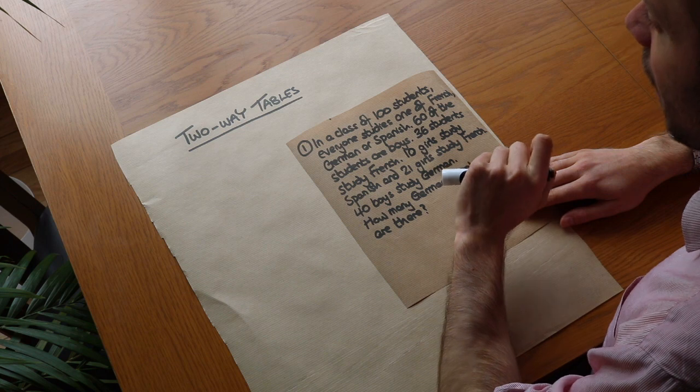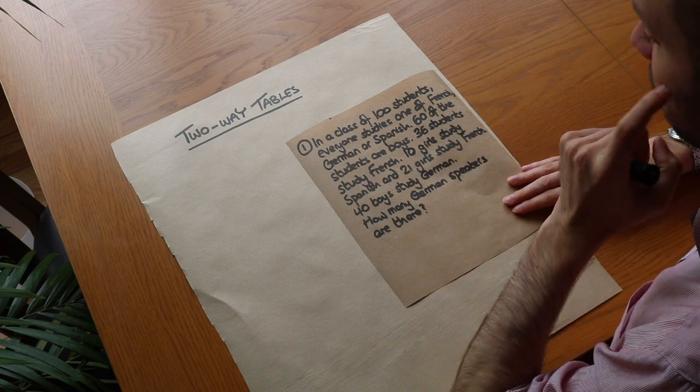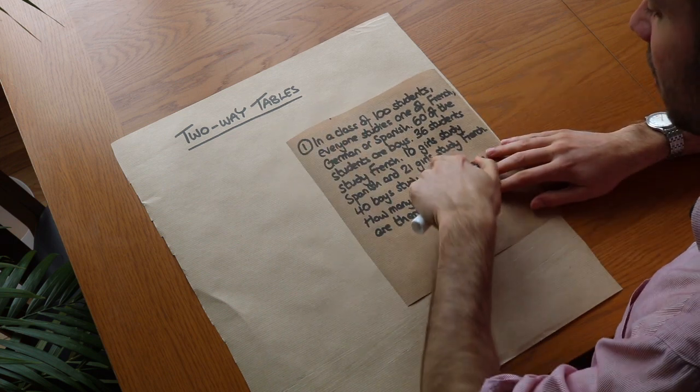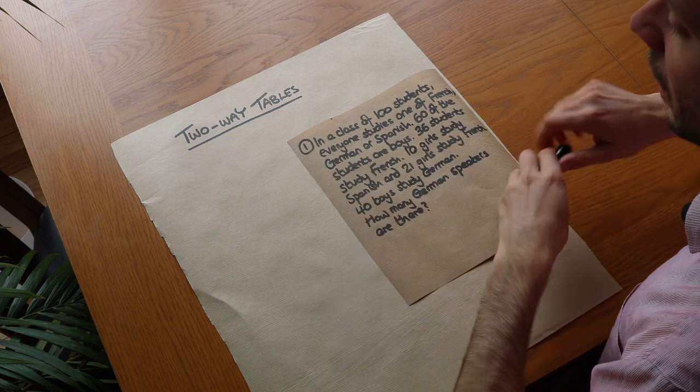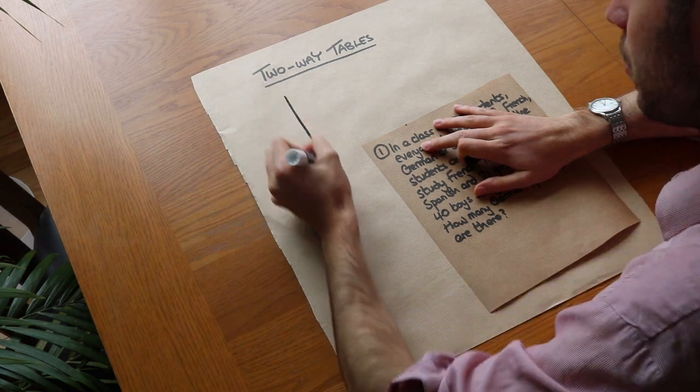Now male or female and we've also got what subject they study whether they study French, Spanish or German and when you have two variables like that and data about the number of people within each of those that's when you can use a two-way table and the way you would draw it is to have a table.